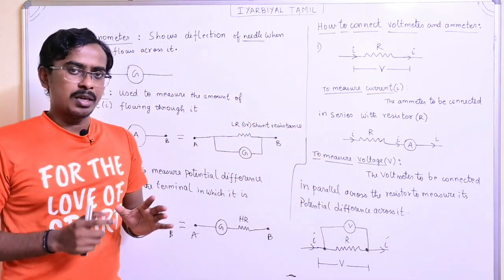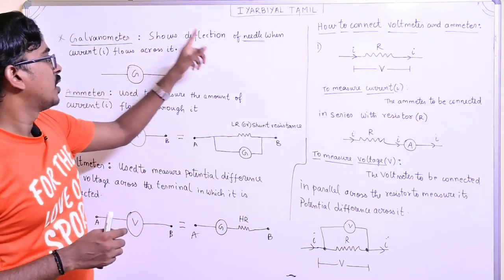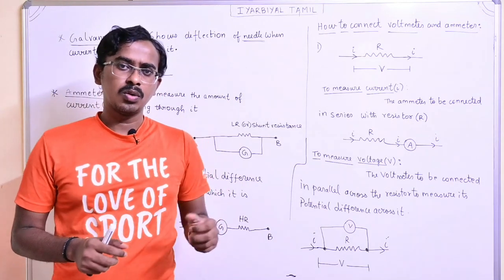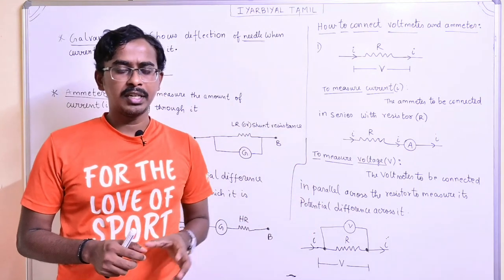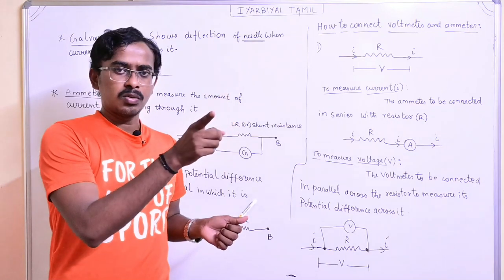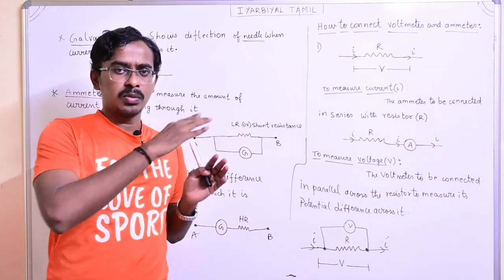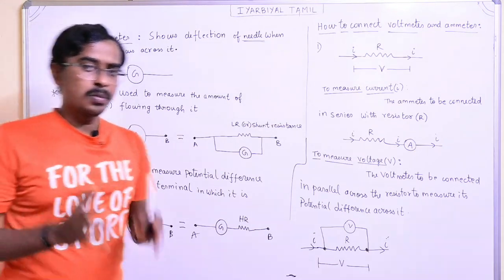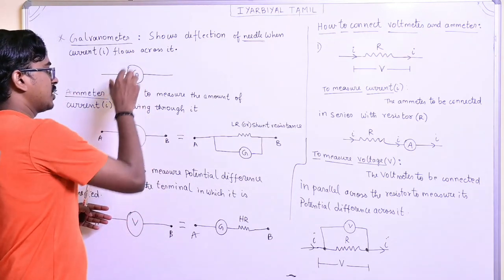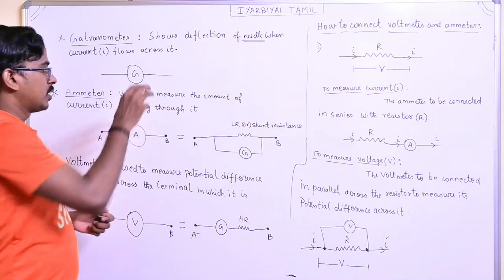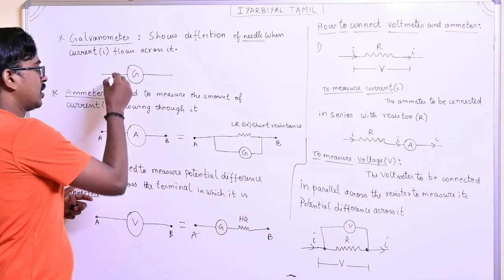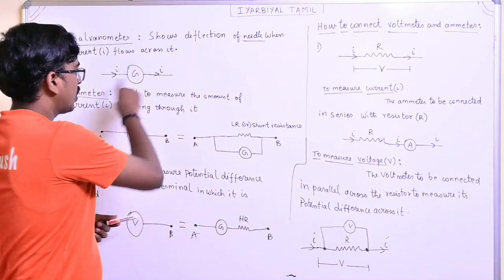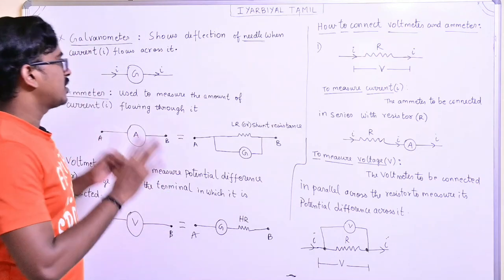Now, what does the galvanometer do? It shows deflection of a needle when current I flows across it. Think of a bike speedometer - if you add it, the meter shows the speed. This is a device. Basically, these are wires. This is a galvanometer. How does the galvanometer change? Through deflection. If the galvanometer is basic, it shows the deflection.